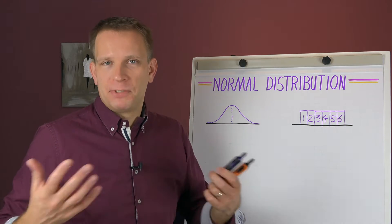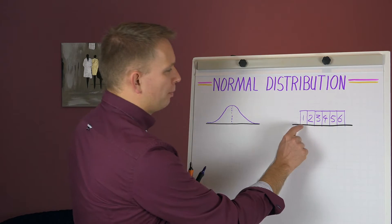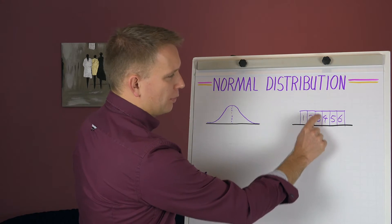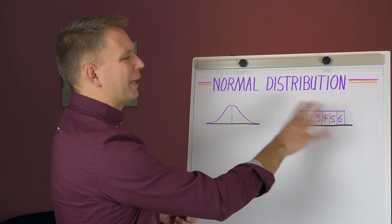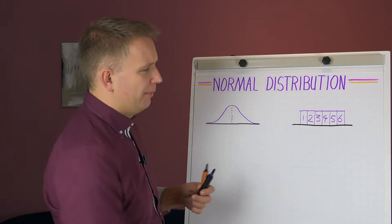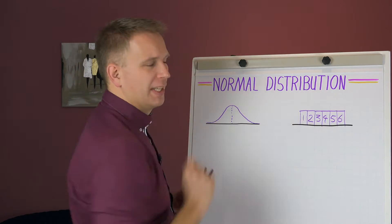So if I would have rolled six thousand times, it would be one thousand, one thousand, one thousand, all of them one thousand. And what you get here is what we call a uniform distribution, because they're all the same height.